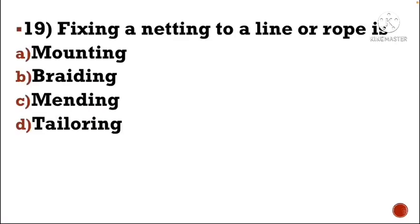Next question: Fixing a netting to a line or rope is — Option A: mounting, Option B: braiding, Option C: mending, Option D: tailoring. The correct answer is Option A, mounting.